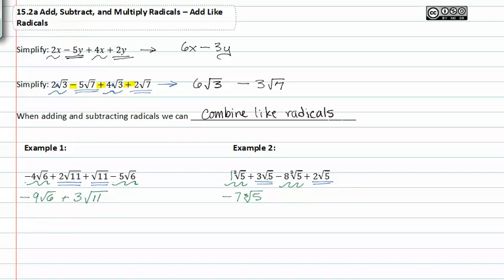Plus 3 square root of 5 plus 2 square root of 5 to get plus 5 square root of 5. And that is my final simplification of adding like radicals.